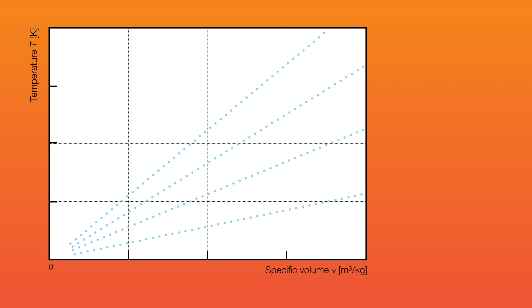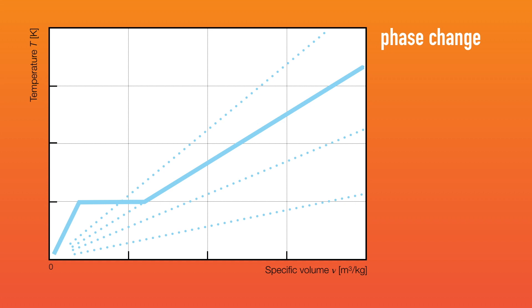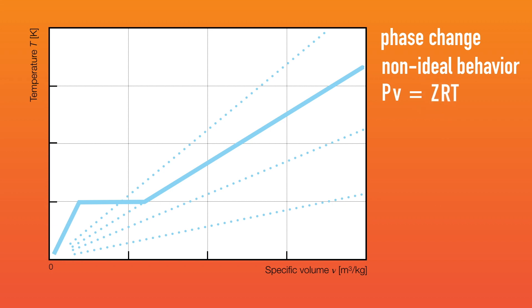Let us take a look at the temperature–specific volume chart with isobars. As we cool a gas, the volume occupied by the gas gets smaller and smaller. What happens when the temperature drops to zero? Does the gas just vanish? How can we have a gas that occupies zero meter cubed? In reality, if this was nitrogen, you know that as temperature drops, at some point the gas condenses into liquid through a process we call phase change. Phase change happens at a constant temperature. Once that is complete, you have liquid nitrogen which continues to cool. Clearly, the ideal gas model was never designed to capture this behavior. Therefore, the ideal gas assumption breaks down as the gas approaches phase change. To capture this non-ideal behavior near phase change, we must add corrections to our equation of state.